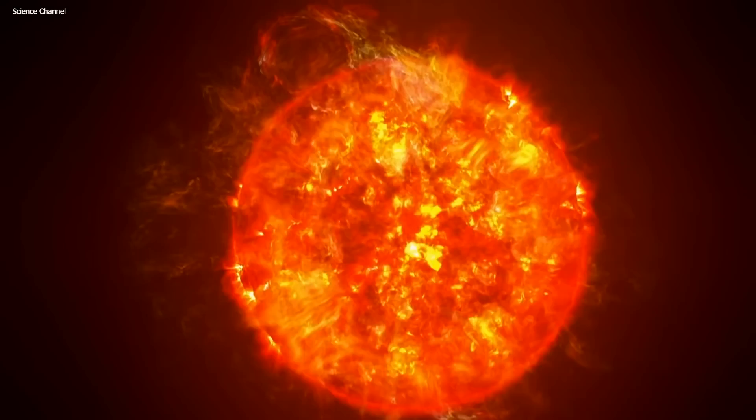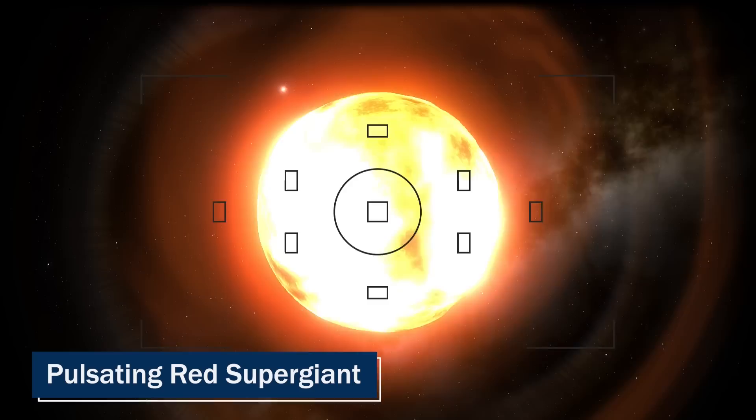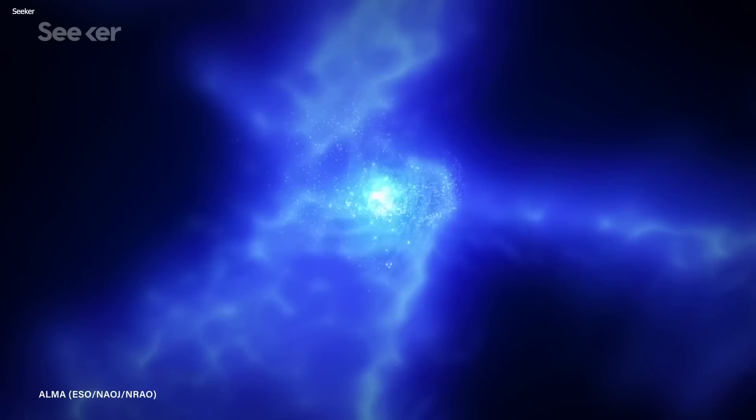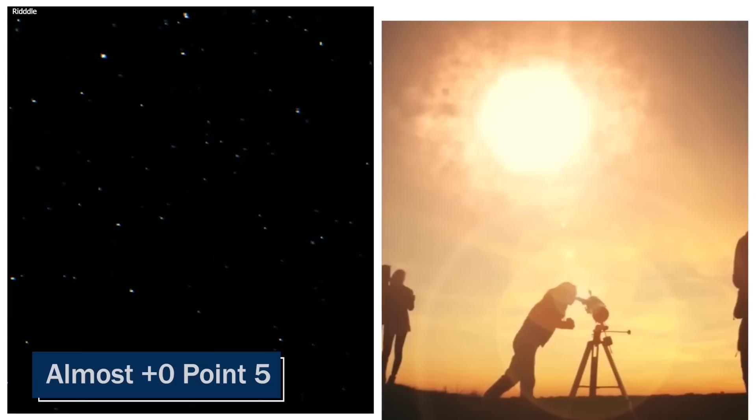But distance isn't the reason why the light changes all the time. Betelgeuse is what we call a pulsating red supergiant, which basically means that it's a big old star that expands and contracts. And when it does, it can get brighter or dimmer in the night sky. The changes in brightness can happen over a long period of time, anywhere from tens to hundreds of days. What's even crazier is that Betelgeuse can vary in brightness from almost plus 0.5 to as bright as magnitude 0. That's a pretty big range. These changes happen in cycles, with the shortest one being 185 days and the longest being 2,335 days.